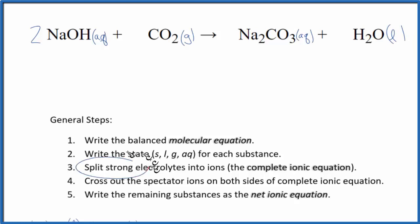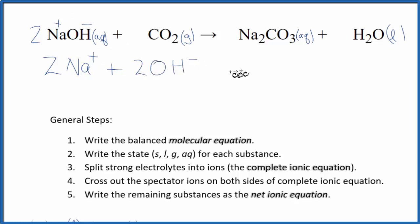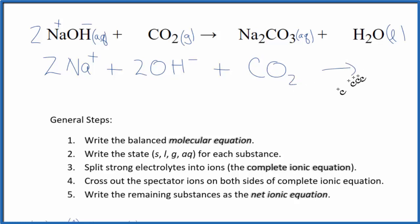Next, we're going to split the strong electrolytes into their ions, and that'll be the complete ionic equation. For sodium hydroxide, sodium (group one) has a positive charge, and the whole hydroxide group is one minus. So we have two sodium ions with a plus charge, aqueous, plus two hydroxide ions. For carbon dioxide, we don't split gases apart in net ionic equations, so just CO2. Those are the reactants.